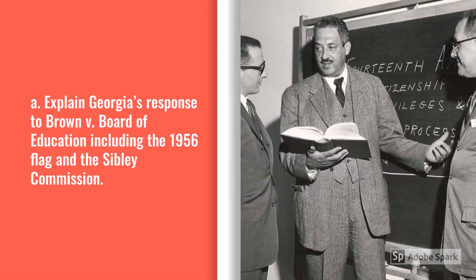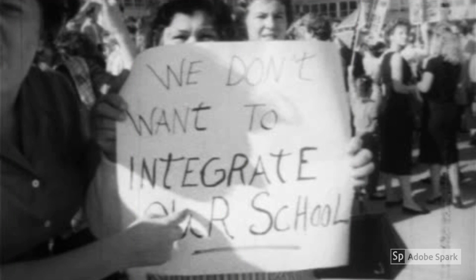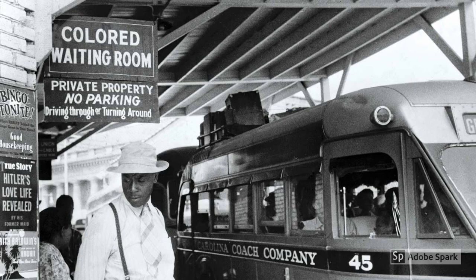In Standard A, we explained Georgia's response to Brown v. Board of Education, including the 1956 flag and the Sibley Commission. In 1954, Georgia's response to the Supreme Court decision in Brown v. Board of Education was purposeful and intense. Brown v. Board of Education overturned the 1896 Plessy v. Ferguson ruling that had allowed for legal segregation.